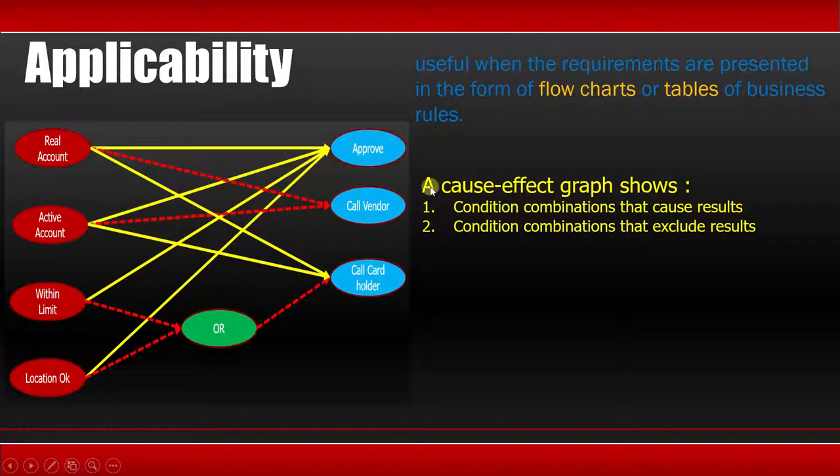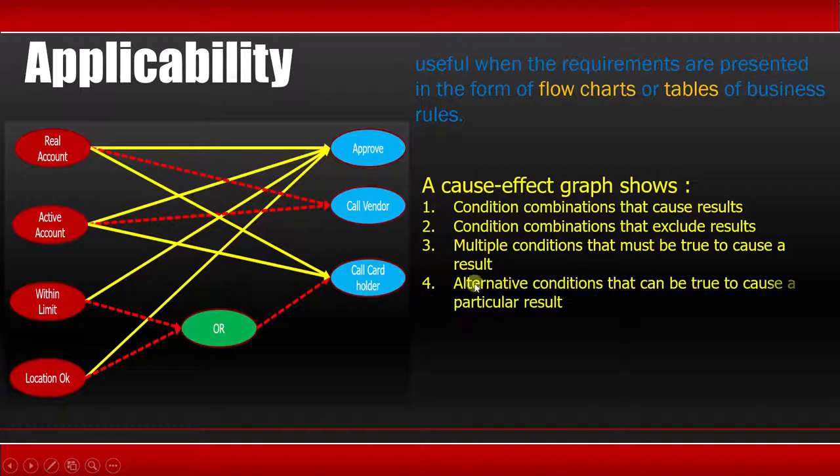Third point is multiple conditions that must be true to cause a result. So in order to approve the transaction, these are the multiple conditions which has to be true. Fourth point is alternative conditions that must be true to cause a particular result.